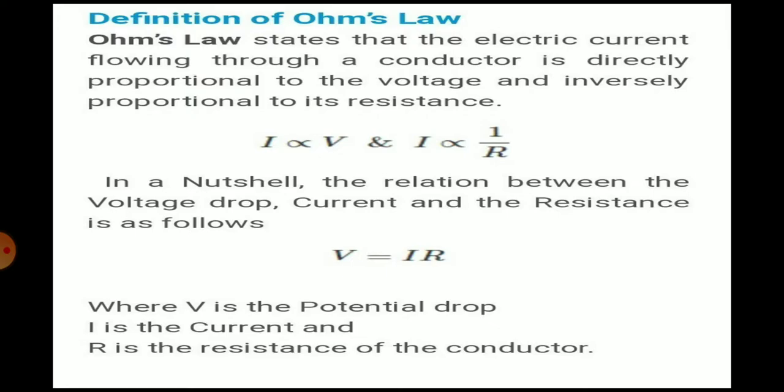In the previous lecture, we explained Ohm's law. Ohm's law gives the relation between voltage and current, provided that the physical state or physical condition of the body remains constant. Temperature is constant. Current will be directly proportional to the voltage, and inversely proportional to the resistance. V is equal to IR, where R is the resistance.